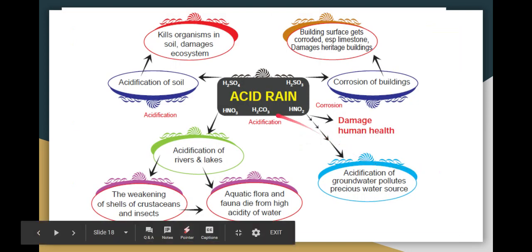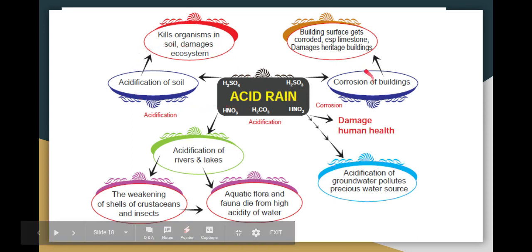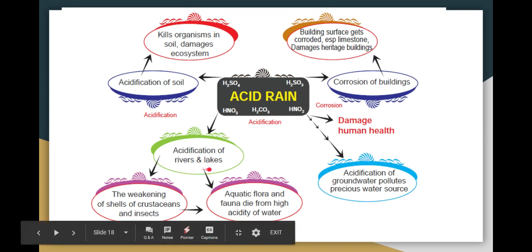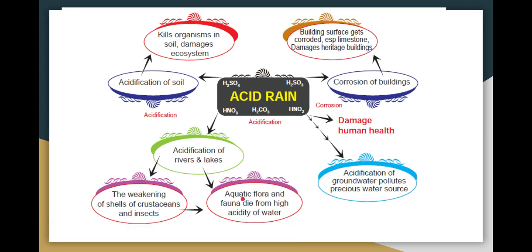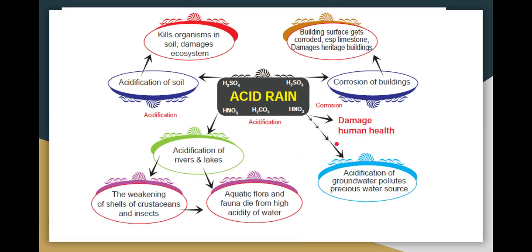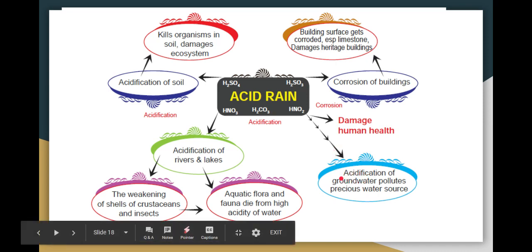Regarding acid rain's chemical effects: H2SO4 and H2SO3 acidify the soil, harming soil microbes. H2SO3 also corrodes buildings and damages heritage sites under conservation. HNO3 acidifies rivers and lakes, harming the flora and fauna living there and weakening the shells of aquatic organisms. Acid rain also damages human health.